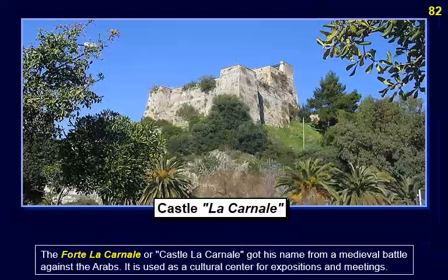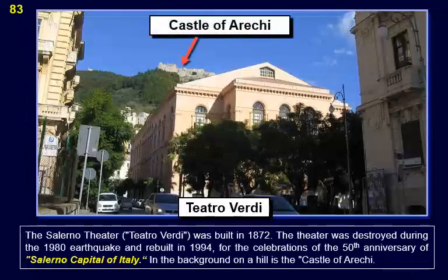The Forte la Carnale got its name from a medieval battle against the Arabs and is used as a cultural center for expositions and meetings. The Salerno Theater, Teatro Verdi, was built in 1872, was destroyed during the 1980 earthquake, and rebuilt in 1994 for the celebrations of the 50th anniversary of Salerno as capital of Italy. In the background on a hill is the Castle of Arechi.